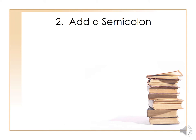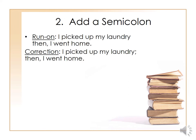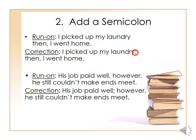A second way to correct a run-on is to add a semicolon. For example: 'I picked up my laundry; then I went home.' So instead of the comma, you put a semicolon. Another example with the correction: 'His job paid well; however, he still could not make ends meet.' We use a semicolon to connect the two sentences together.